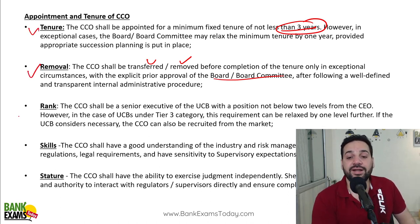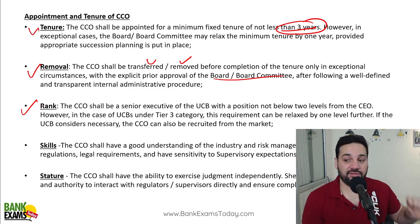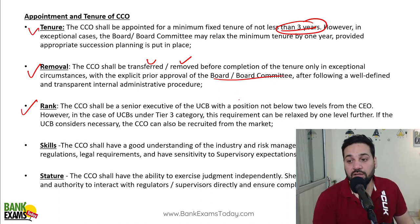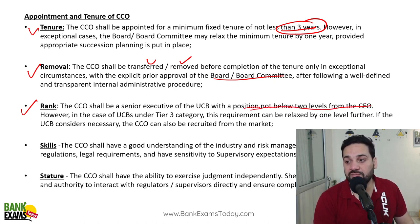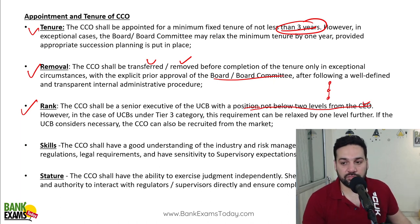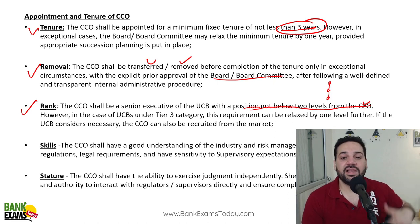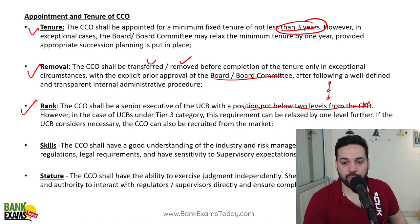Who should be appointed as CCO and what rank should the CCO hold in the organization? The position should not be below 2 levels from the CEO — the CEO is at the top and the CCO can be at most 2 levels below. In the case of Tier 3, it can be 3 levels below the CEO.